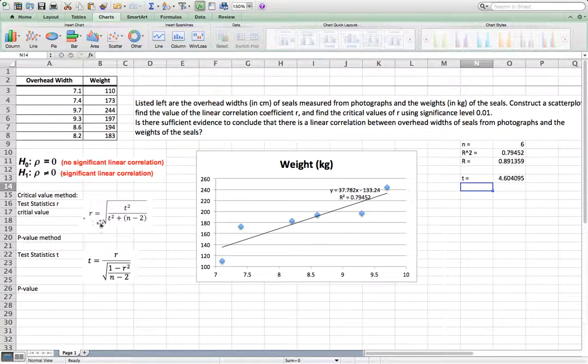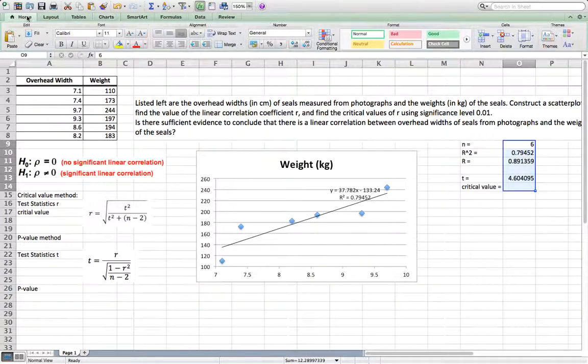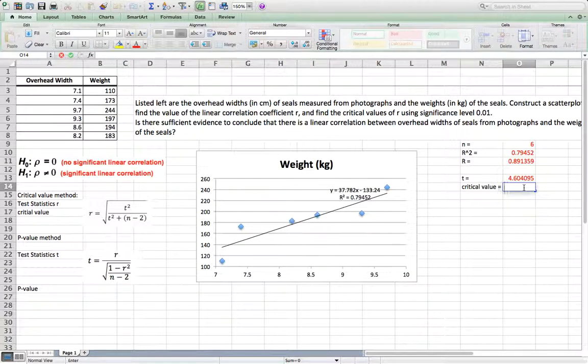Now, then I want to calculate critical value. This critical value equals, I use this formula. This formula is square root of t square, t square, which is O13 square, then divide by O13 square, plus n minus 2, which is O9 minus 2. Then take square root. So that's your critical value.